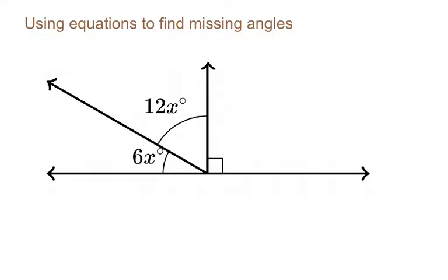Hello everyone. Today we're going to look at some examples on how to use equations to find missing angles given some sort of diagram with lines or shapes, basically using the relationships between angles that we talked about in previous videos like complementary angles, supplementary angles and vertical angles.